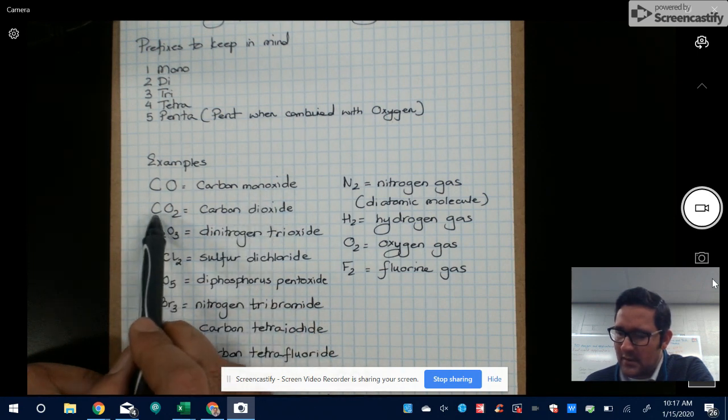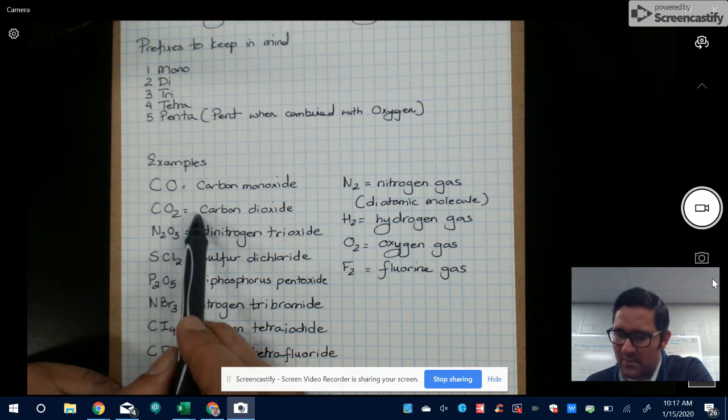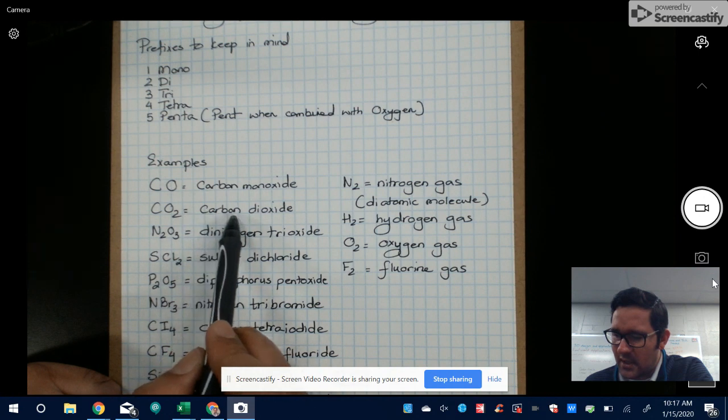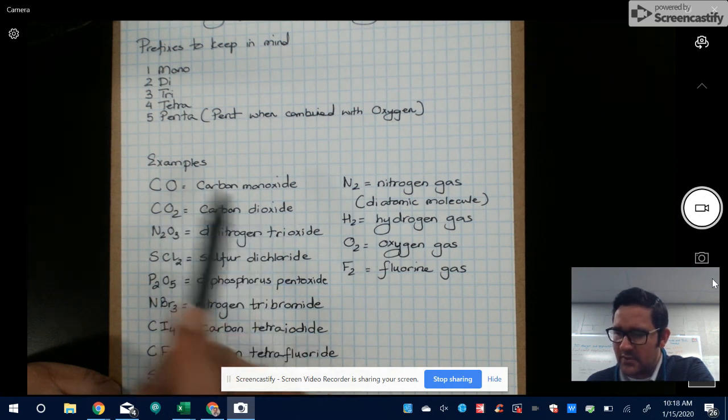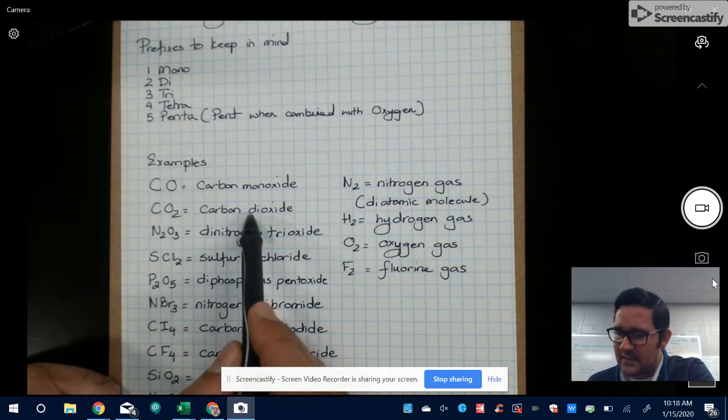Let's take another example, carbon dioxide. There's one carbon, there's two oxygens. Once again, you're not going to use mono for the first element. So we can just call it carbon. And there are two oxygens. So we're going to use the two prefix dioxide.